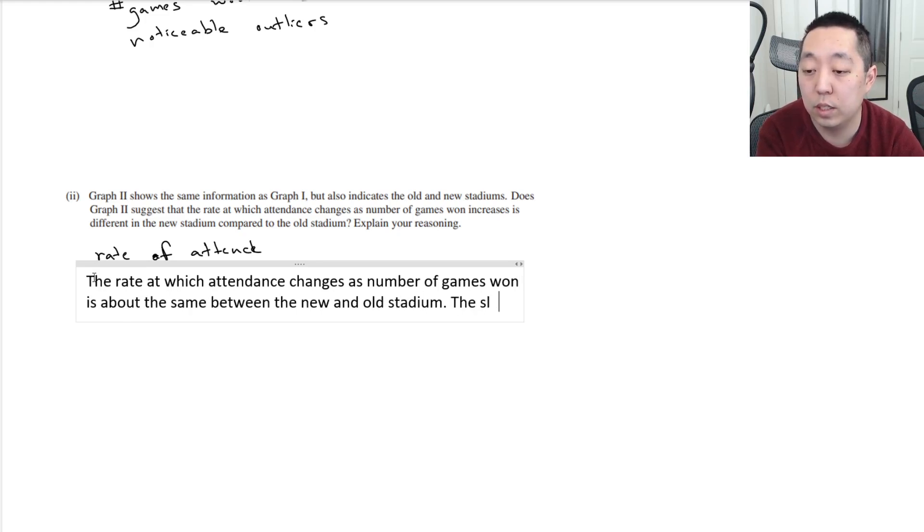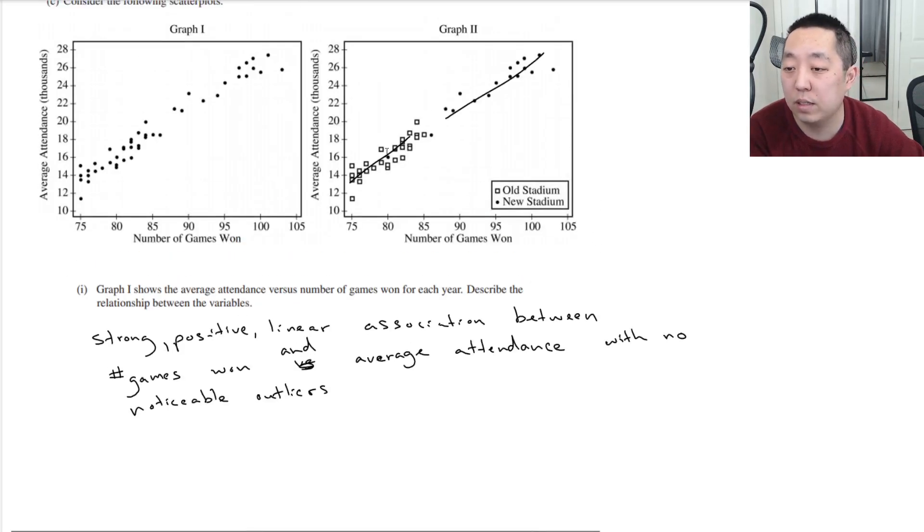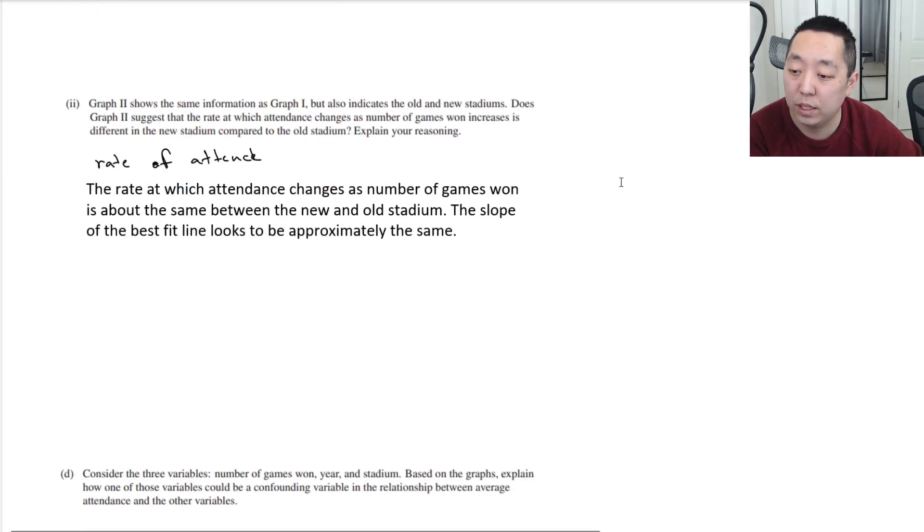The slope of the best fit line looks to be approximately the same. They're very similar. Maybe the new stadium is a little bit flatter, but I would say it looks pretty much dead on. There's really hard to tell a difference in the slope.